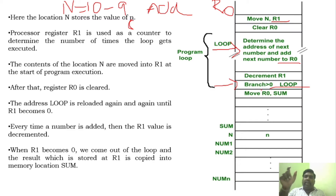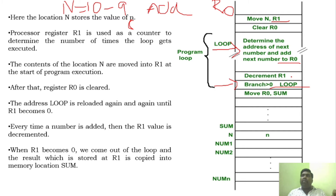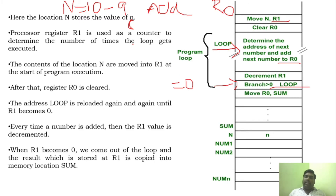This branch instruction will have a target address. In order to perform the loop, there should be a condition for how many times it has to execute. Only if that condition satisfies will it go to the loop. The branch is greater than 0 — that is, whenever R1 value starts at 10 and is decremented to 9, then 8, if R1 value is greater than 0, the loop will be executed. If it is equal to 0, it is not greater than 0.